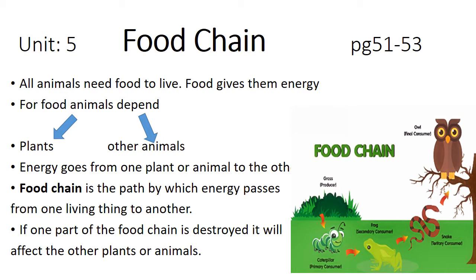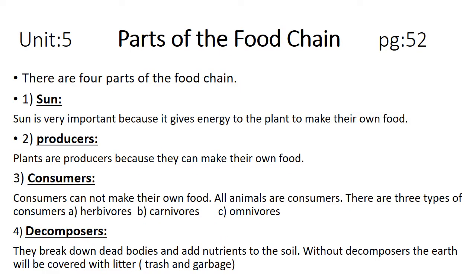Now we are going to discuss the different parts of the food chain, on page 52. The food chain has four basic parts. Number one is the sun. The sun is very important because it gives energy to plants to make their own food. Plants need sunlight — that is very important for the process of photosynthesis, through which plants make their food.